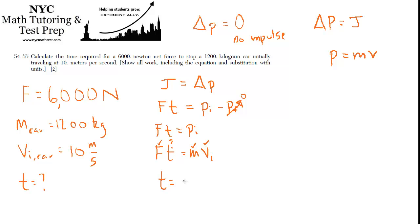We get T equals mass of the car times the initial velocity of the car divided by the force that's used to stop the car. And now we can make those substitutions. The mass is 1,200 kilograms times 10 meters per second, and that's all being divided by 6,000 newtons.